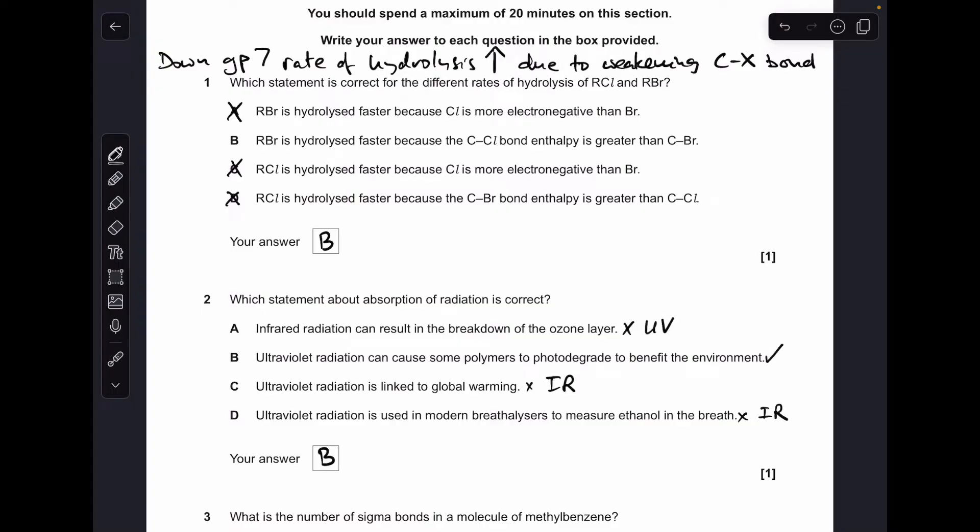Question two, I've already answered it there, it's B. So just quickly run through the wrong options. The ozone layer is broken down by UV. Infrared is linked to global warming. And modern breathalysers use infrared spectroscopy to measure ethanol in the breath.